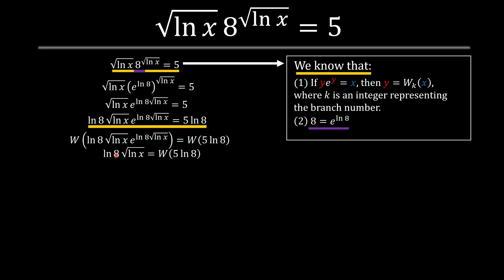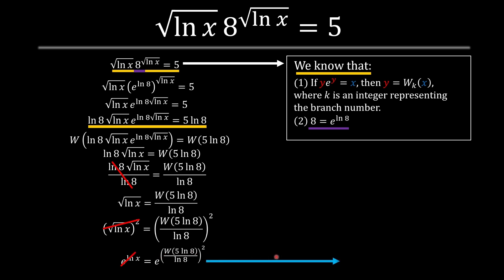So this goes away, we just have ln 8 square root ln x and we acquire W of 5 multiplied by ln 8. Now we divide ln on both sides, we square both sides of the equation and we raise it to e and we acquire this.